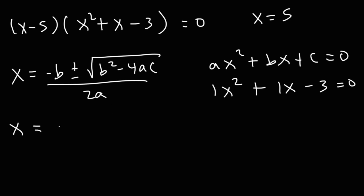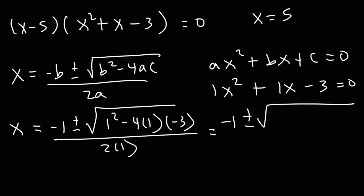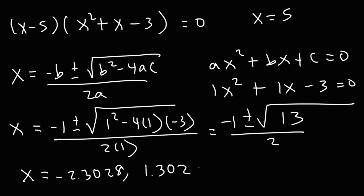Plugging into the formula: negative 1 plus or minus the square root of 1 squared minus 4 times 1 times negative 3, divided by 2 times 1. Since 4 times negative 3 gives positive 12, plus 1, that's 13 under the radical. The decimal values are: negative 1 minus the square root of 13 all divided by 2 is approximately negative 2.3028, and negative 1 plus the square root of 13 all divided by 2 is approximately positive 1.3028.